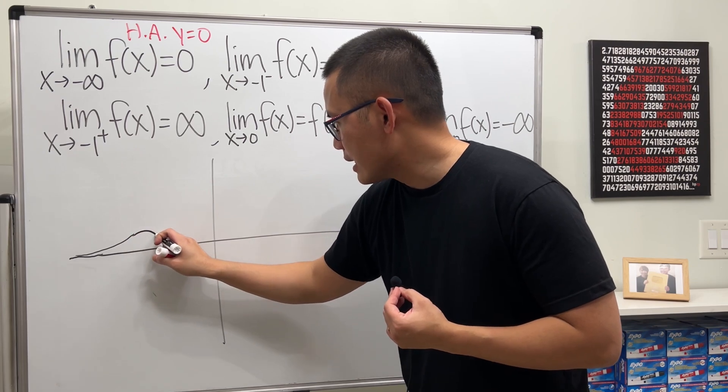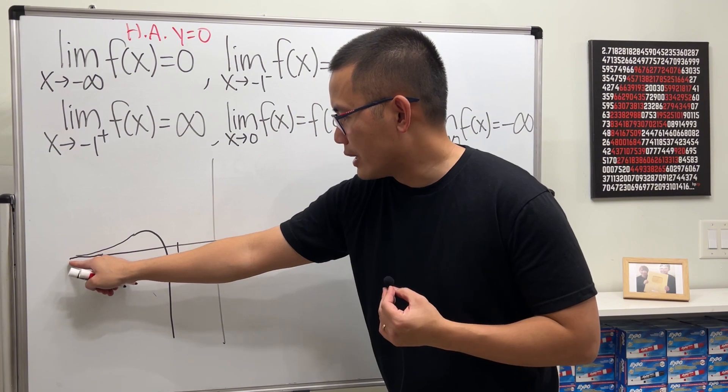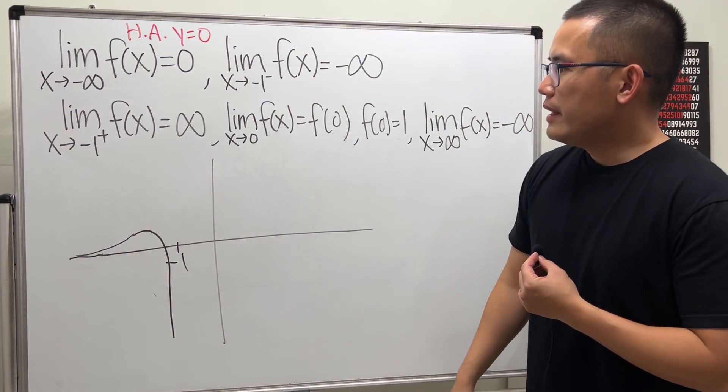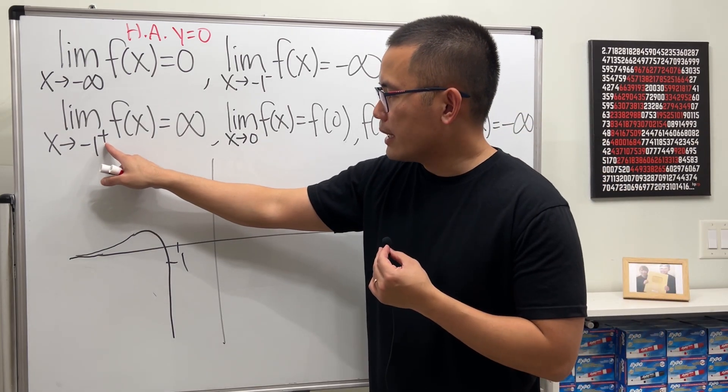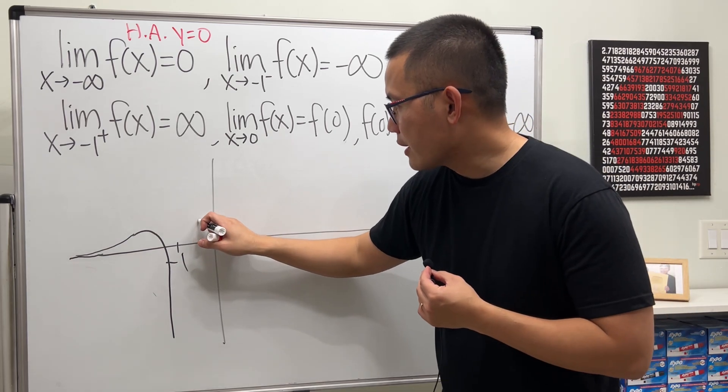So maybe it was easier if you do it like this. It would be easier, but this is okay. And then, if you go from the right-hand side, negative 1 plus, we get positive infinity. So we get something like this.